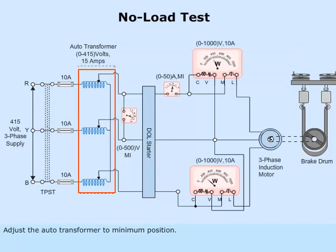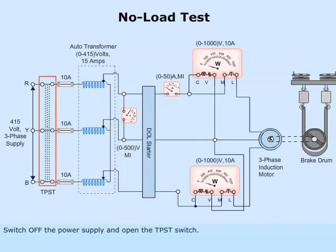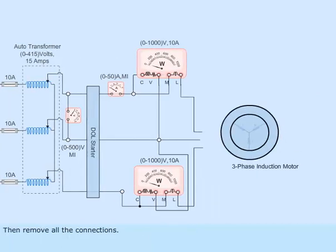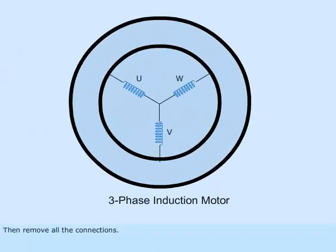Adjust the autotransformer to minimum position. Switch off the power supply and open the TPST switch. Then remove all the connections.